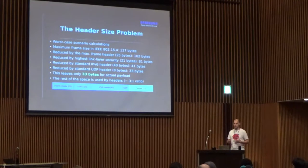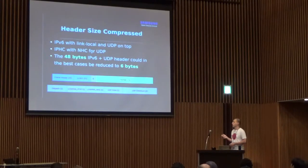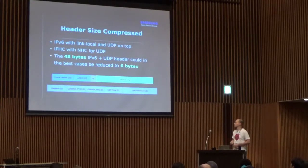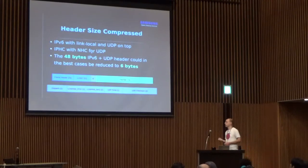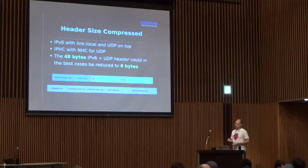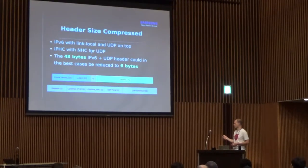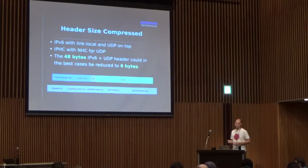That's something you have to address if you want to use these protocols over these networks, and that's where header compression comes in. For link-local communication with UDP, using IP header compression and next-header compression, you can reduce the normal 48 bytes of headers down to just 6 bytes in the best case. That really gives you a lot more usable payload — it cuts down most of the IPv6 header and a bit from the UDP header.